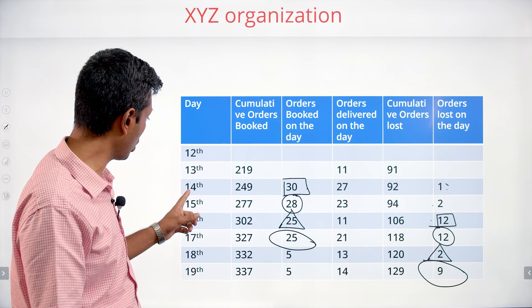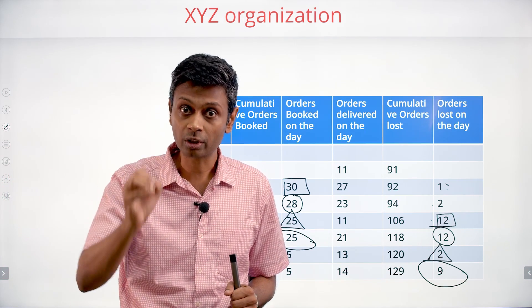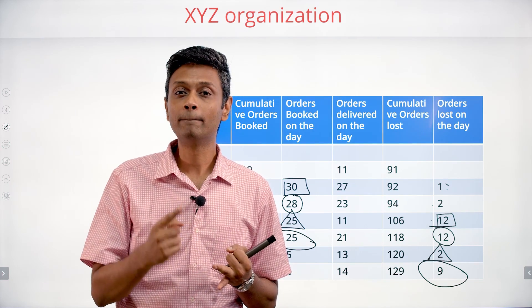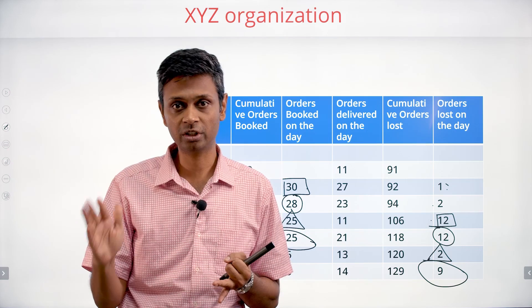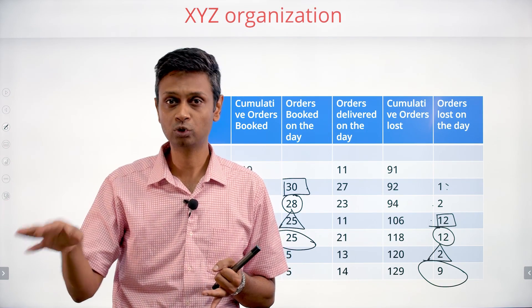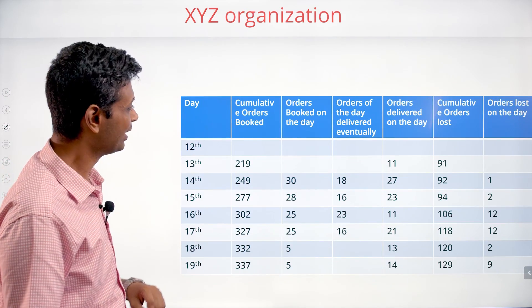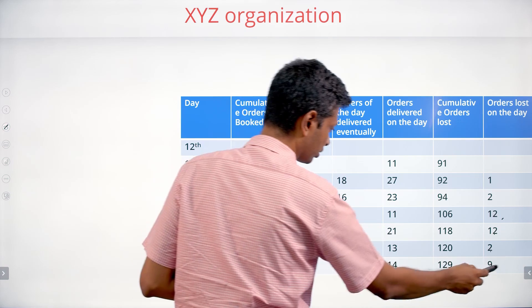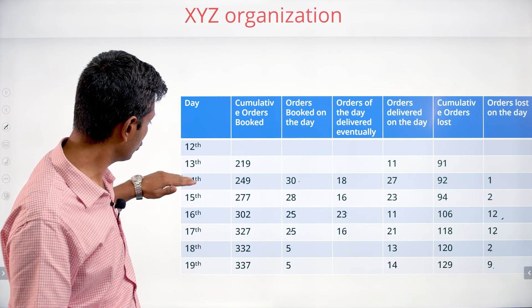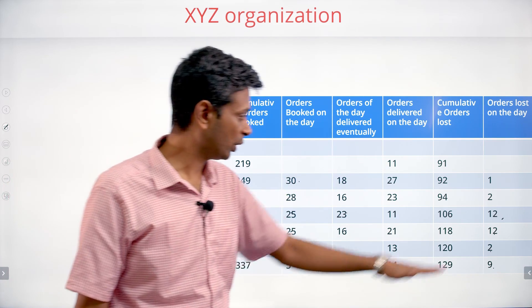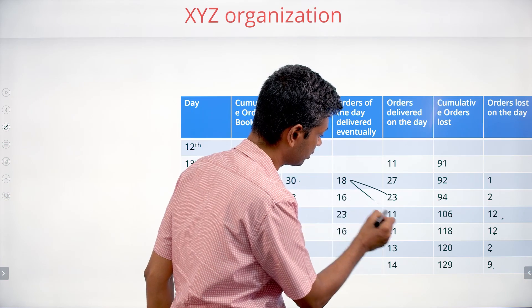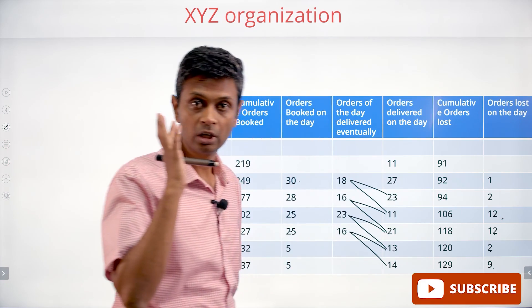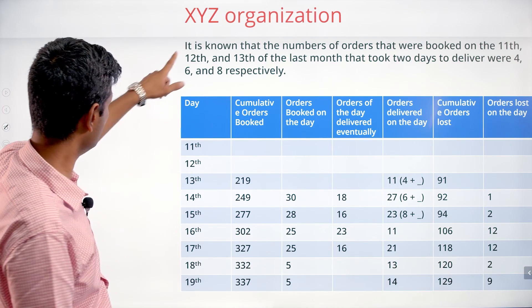There are two distinct quantities: orders delivered on a given day, and orders booked on a given day that were eventually delivered. For 14th, there could be orders delivered on 14th, and separately, orders booked on 14th that were eventually delivered on 15th or 16th — those are booked but not lost. Let's track that. It's simple: 30 minus 12 is 18, 28 minus 12 is 16, 25 minus 2 is 23, 25 minus 9 is 16. So orders for 14th: 30 booked, 18 delivered, 12 lost.